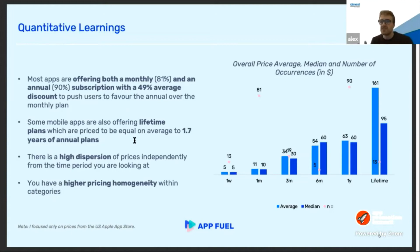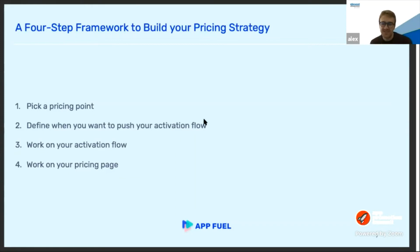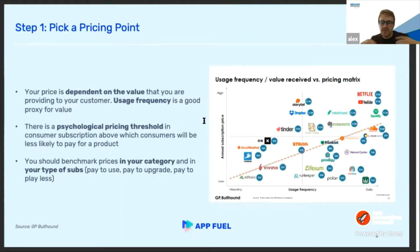There is high dispersion of prices when you look at all companies across all categories, but when you zoom into certain categories it makes more sense. What I want to share today is a framework around pricing — a four-step framework. I will first discuss the pricing point, then dig into how to push your subscription in the app, going from where you put your activation flow in the user experience, to the activation flow itself, and then the last and most important step: the pricing page.